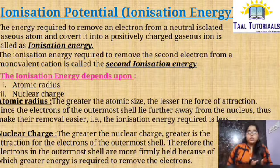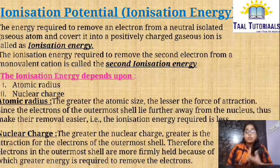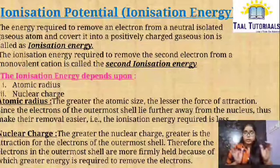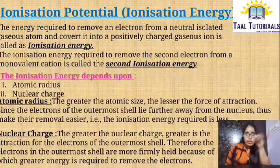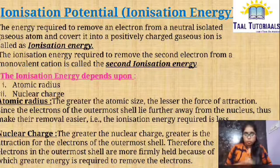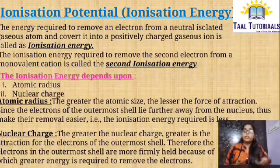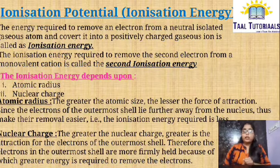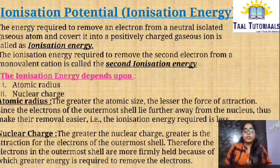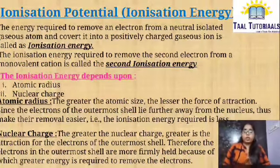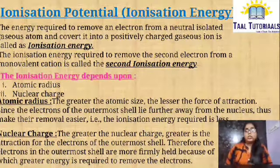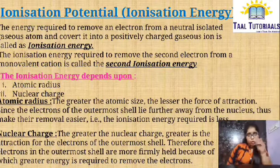So Ionization Energy required will be less if there is a greater atomic radius, since the larger size means a lesser force of nuclear pull. Regarding nuclear charge — the greater the nuclear charge, the greater is the attraction from the nucleus to the electrons of the outermost shell. Therefore, the electrons in the outermost shell are more firmly held due to the greater force between the nucleus and the outermost shell.